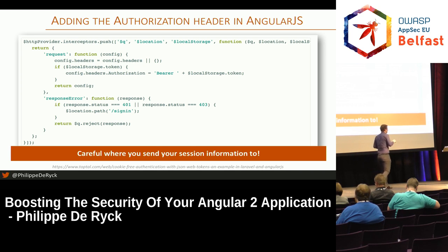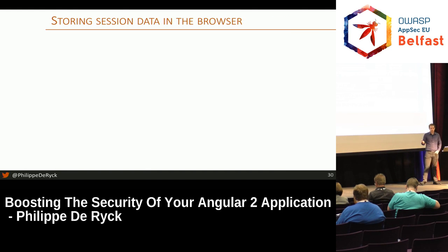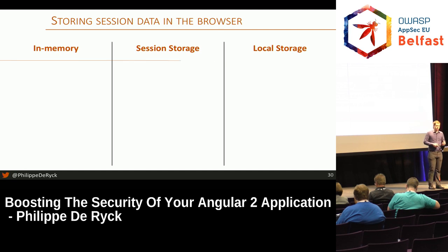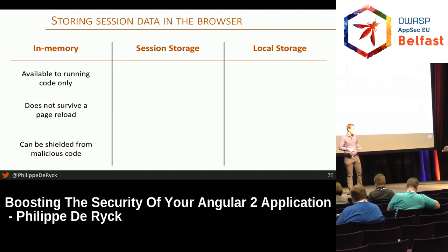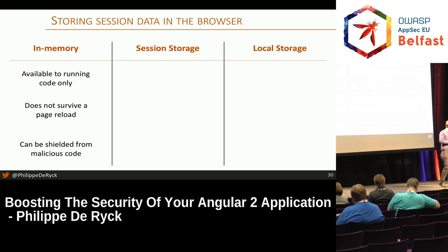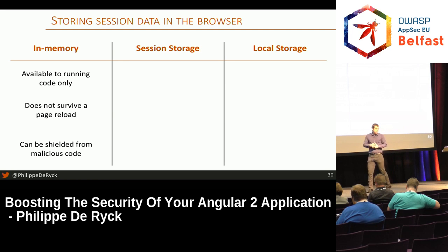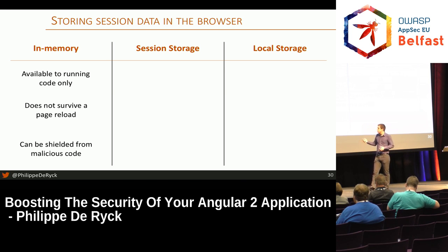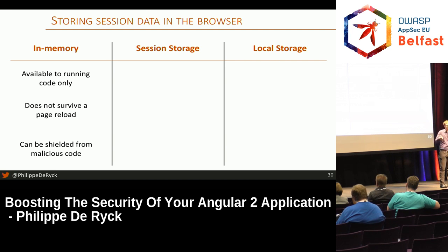There are a few trade-offs you need to be aware of when storing session data in the browser. First is in-memory. In-memory is easy to do and available to your running code. But this does not survive a page reload — when somebody reloads the page, your memory context is re-initiated and your token is gone. The benefit is that if there is some kind of injection attack in your page, using in-memory storage can kind of shield the token from that script, making it really difficult to steal the session token in case of an attack.